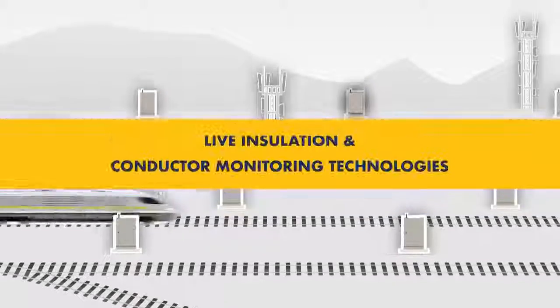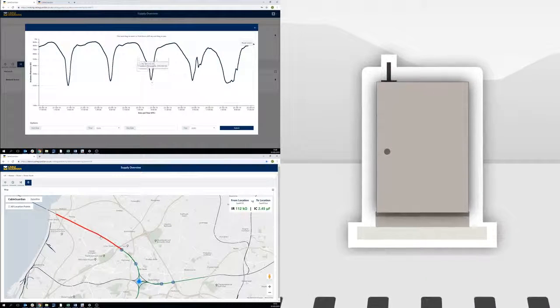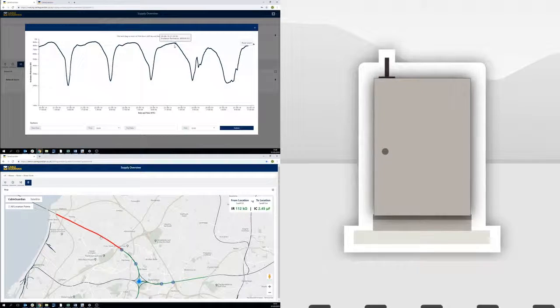Two systems into one. Cable Guardian combines insulation resistance monitoring and conductor monitoring technologies into one single platform. It enables real-time monitoring, fault diagnosis, and location on live electrical systems.